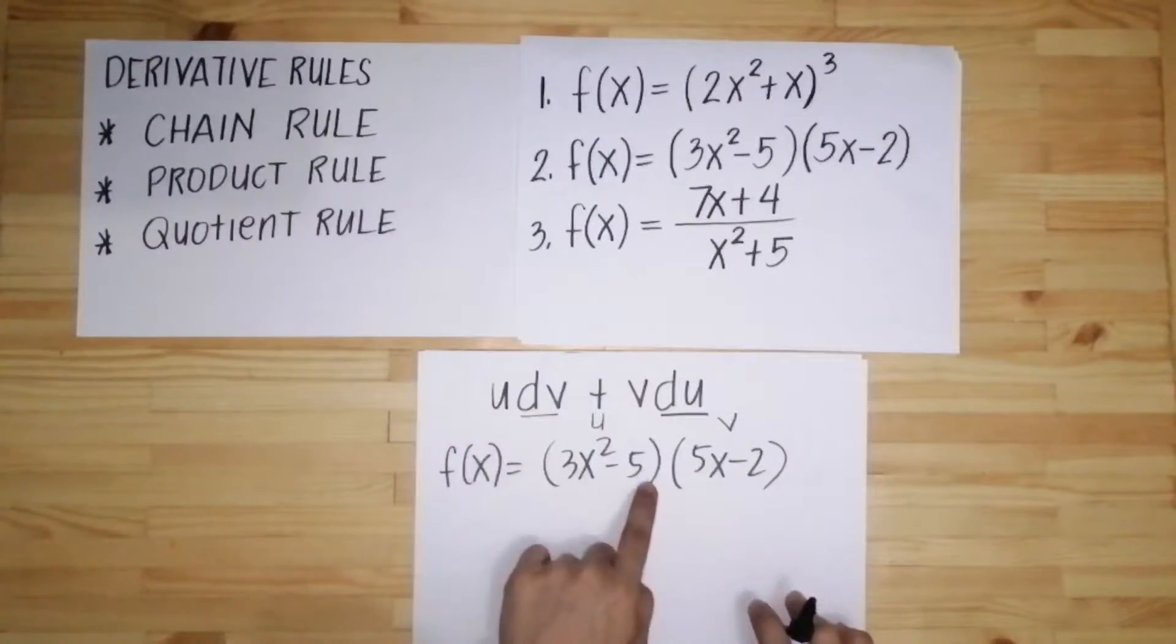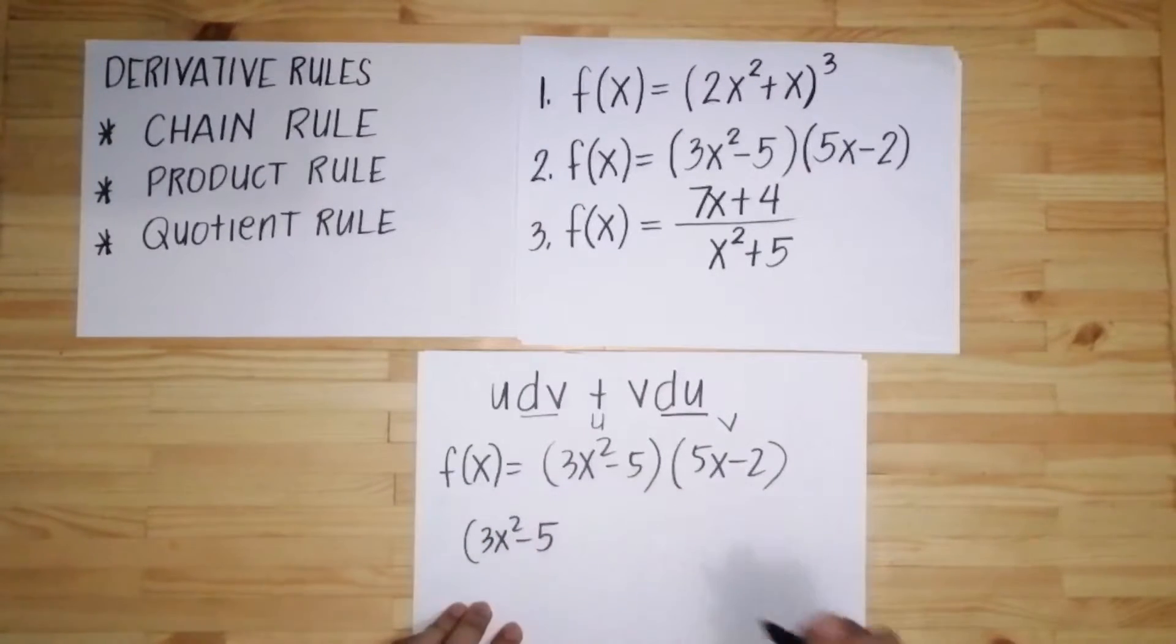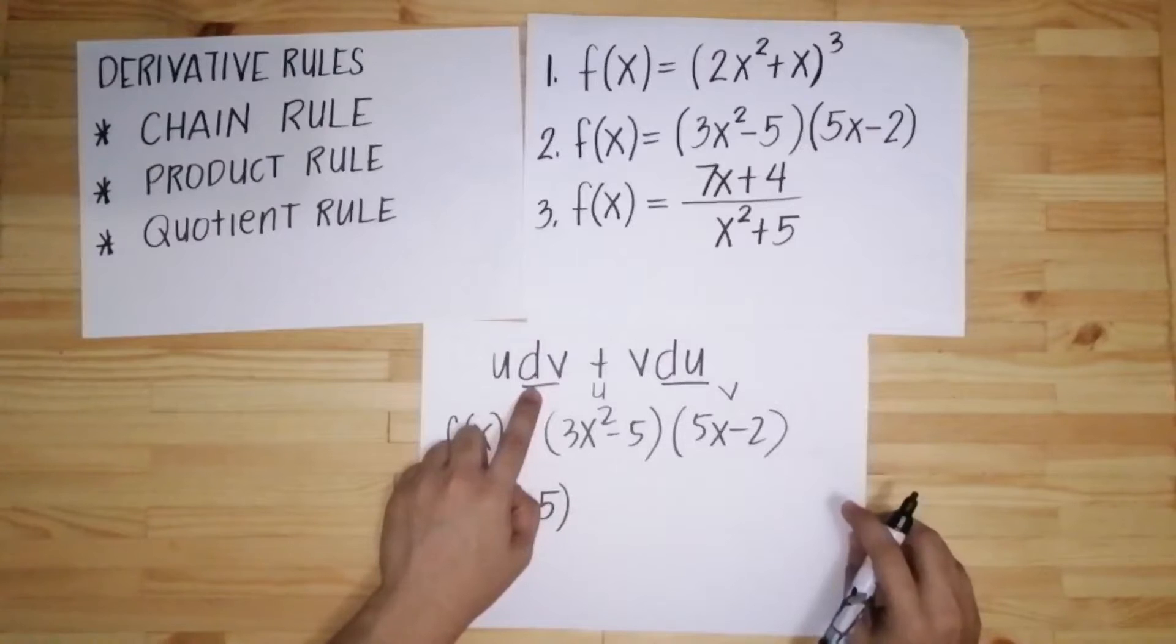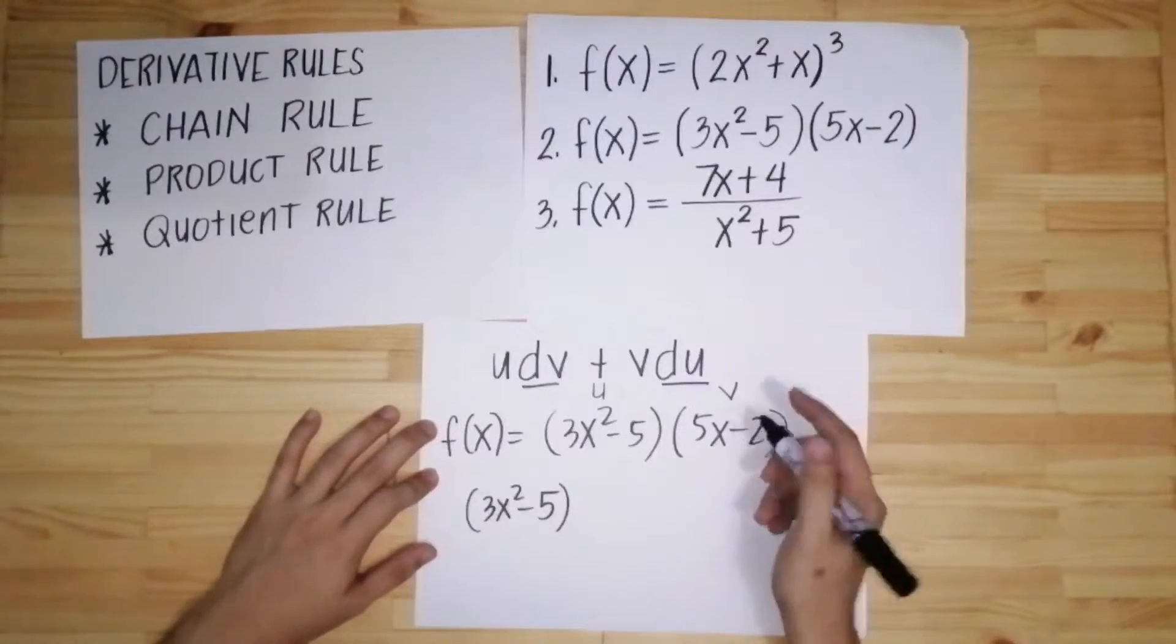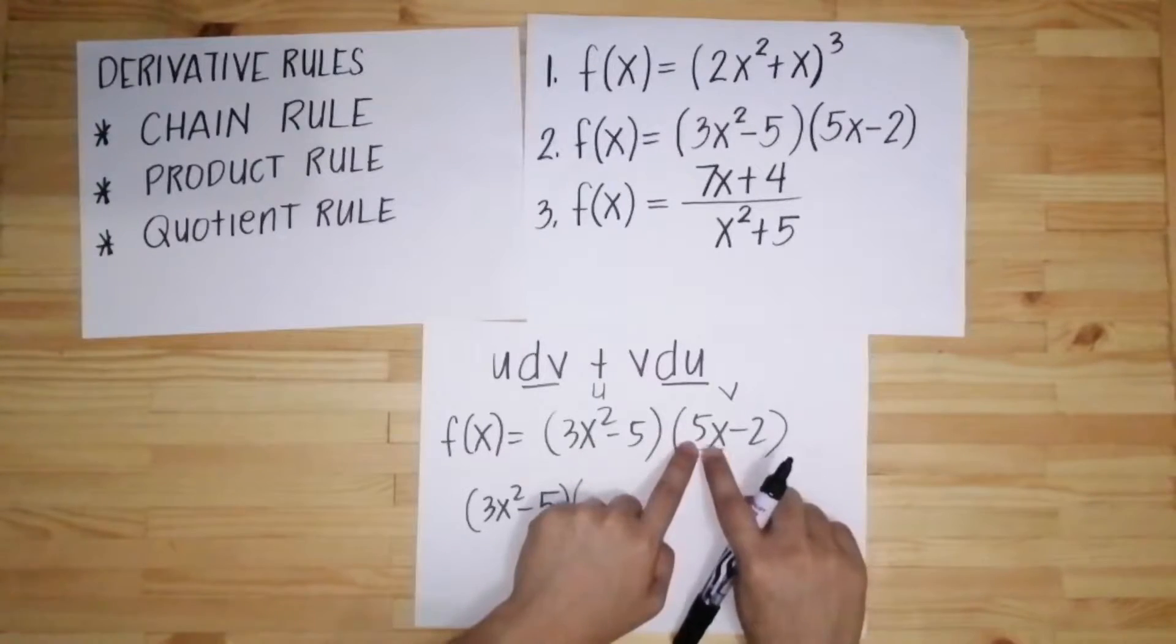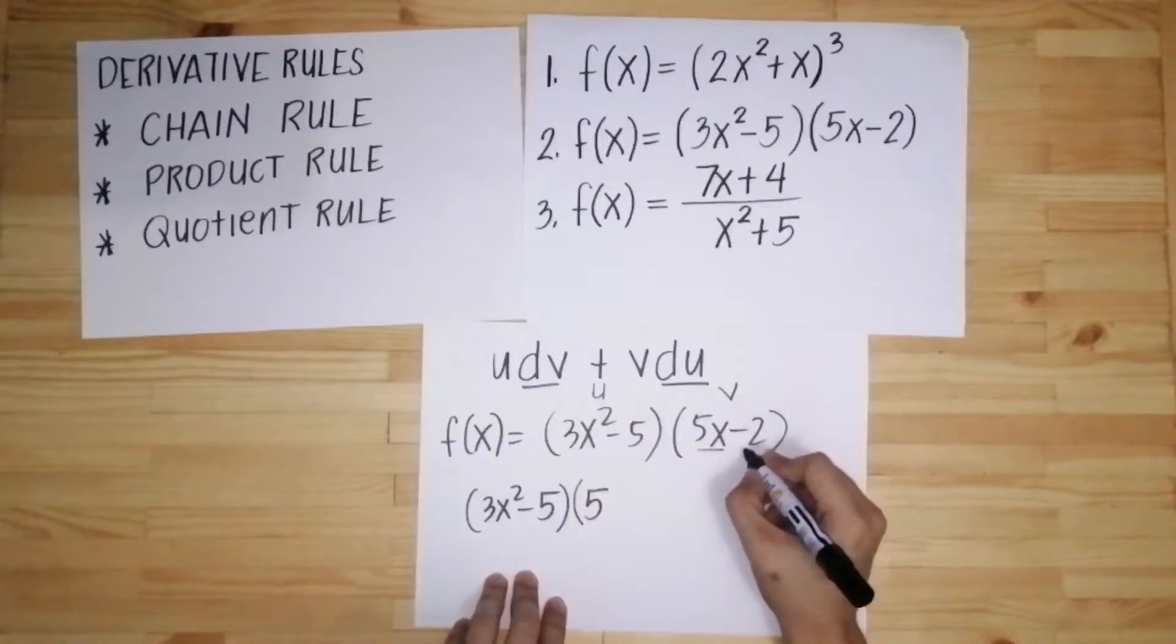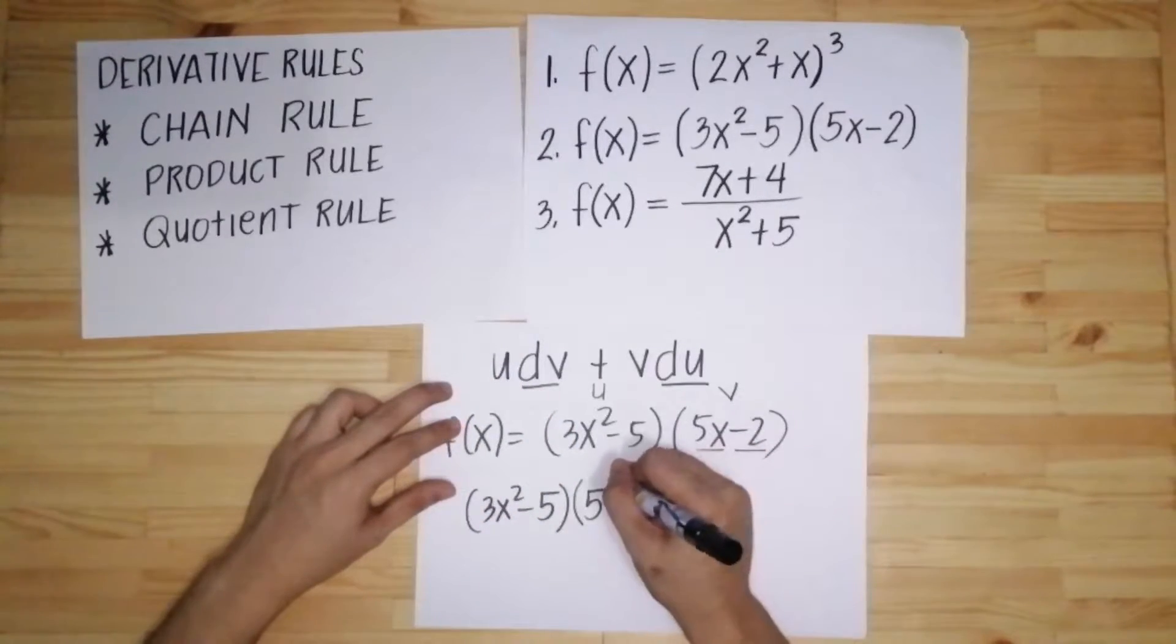Yung u, copy natin yung u. So u is 3x squared minus 5. Then katabi ni u dito ay dv. Pag sinabing dv, wag mong copy yan si v. Kailangan get the derivative of v. So this is v. Get the derivative ng 5x that is equal to 5. So kapag merong number that is multiplied to x, ang sagot ay yung number lang. Then derivative of constant is negative 2, ang derivative nun ay 0. So 5 na lang ito.